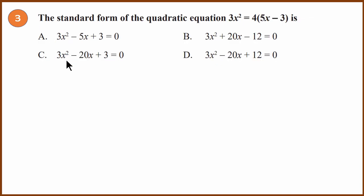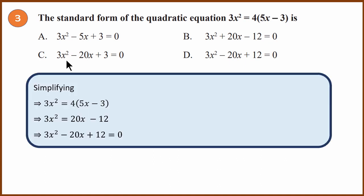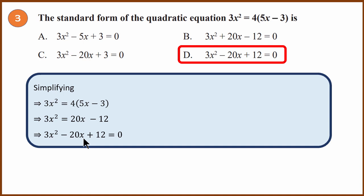Third question: standard form of a quadratic equation. Simplify 3x² = 4(5x − 3). That gives 3x² = 20x − 12. Bring everything to the left-hand side and you get the equation. Simplifying gives us the standard form. The answer is T (option T).